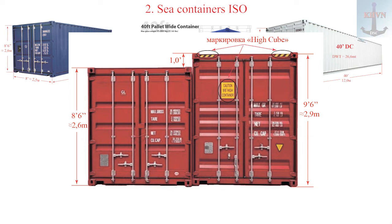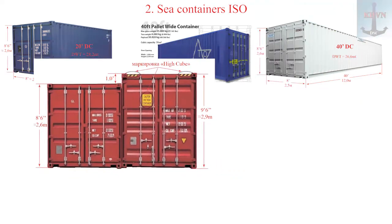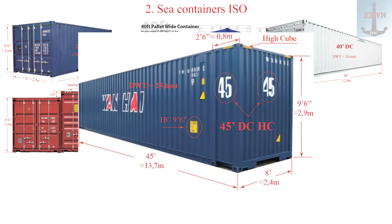An HC next to a standard is easy to distinguish. A single high cube is distinguished by striped yellow and black marking on the top and a sticker. On deck, the high cube is no problem and can be treated as standard, but when loading into the hold, be careful when drawing up the cargo plan — if you make a mistake, you risk not being able to close the hold with lids.